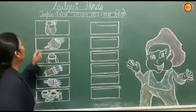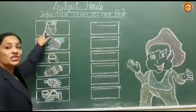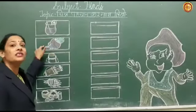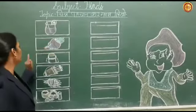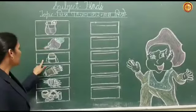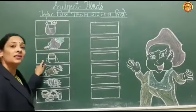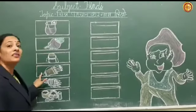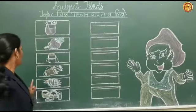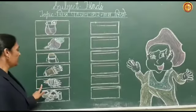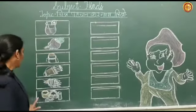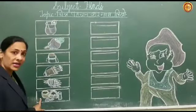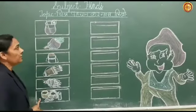First picture is शर्वत, second is शल्डव, third is थर्मस, fourth is तर्कष, fifth is खत्माई, and the last one is बर्तर.